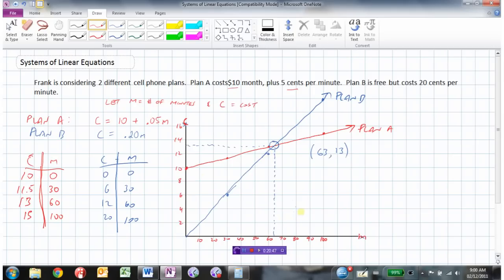If he's going to talk for less than about 63 minutes, then Plan B is a better choice. It's cheaper. But once he gets over 63 minutes talking, now Plan B becomes more expensive than Plan A. And as you extrapolate this farther, the difference is even going to be greater.